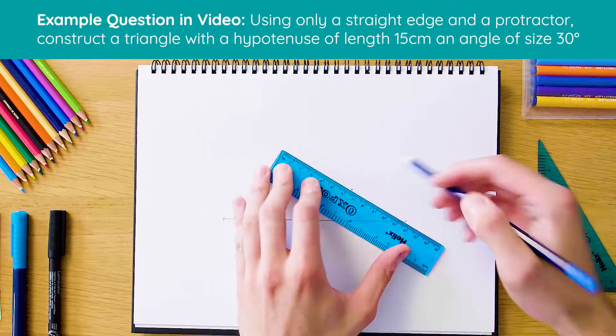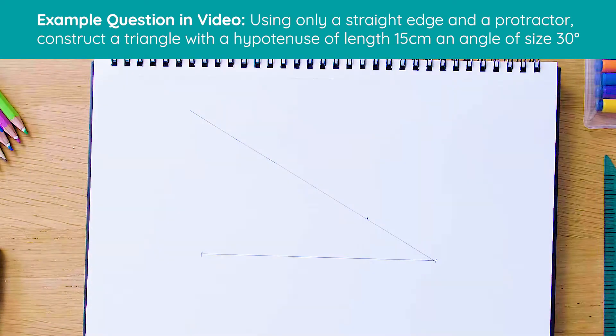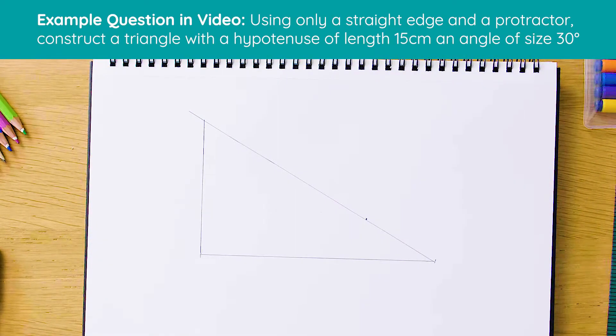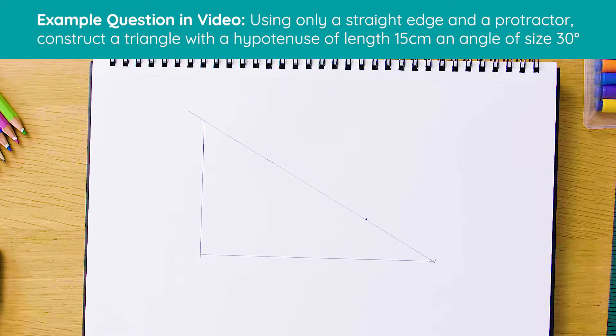Okay, so here's what our right angle triangle will look like once it's finished. As you can see we've got our 15 centimeter line and our 30 degree angle, so let's just see how to do this now from scratch.